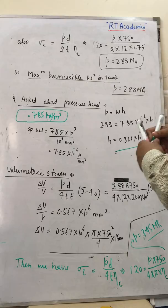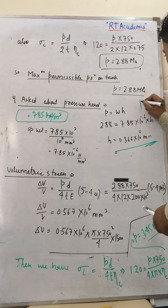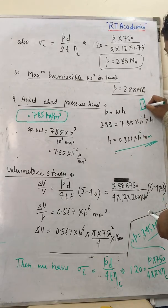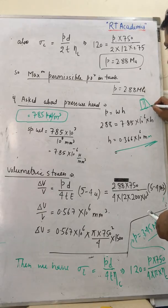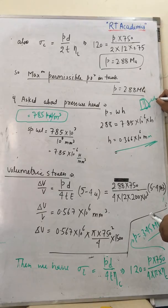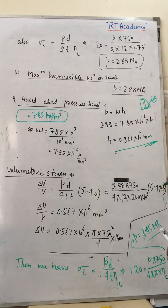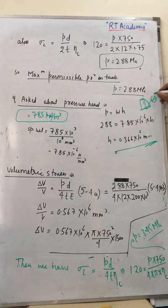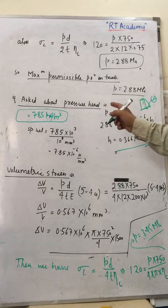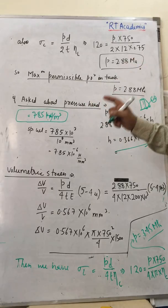If we have a cylindrical body, the pressure distribution varies with height H. The maximum pressure at any level is w × h, where h is the height of liquid above that level and w is the specific weight.